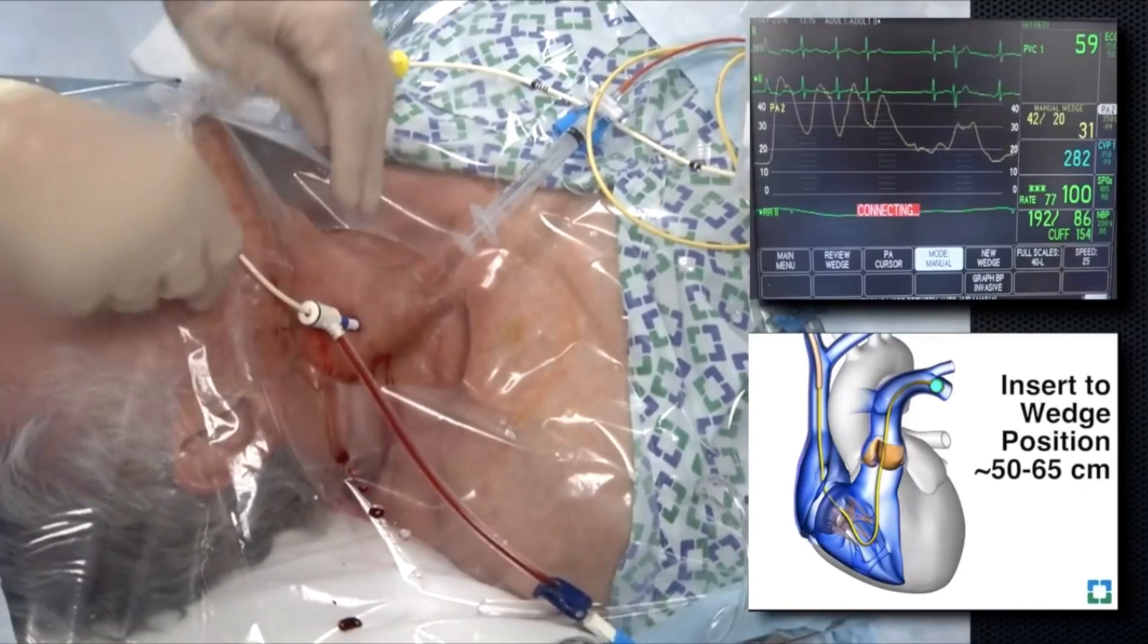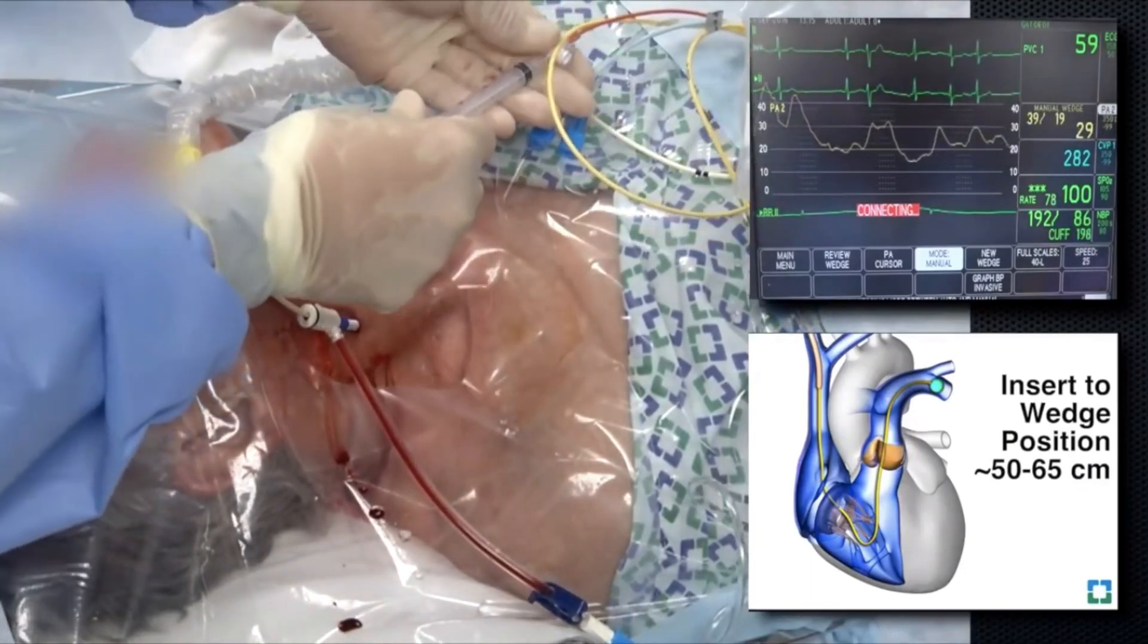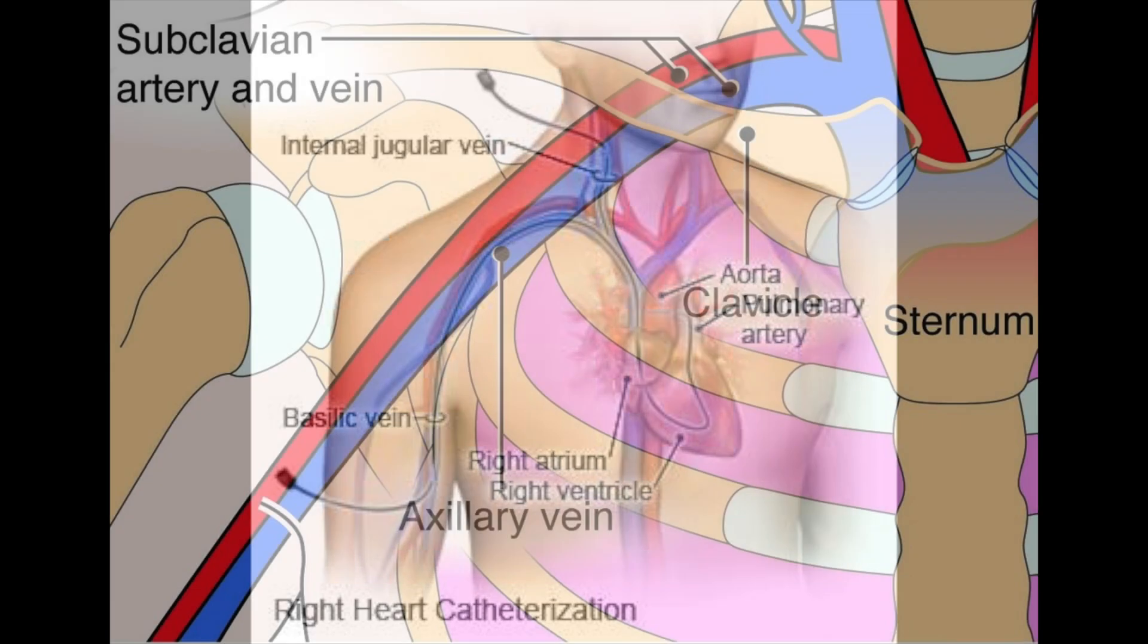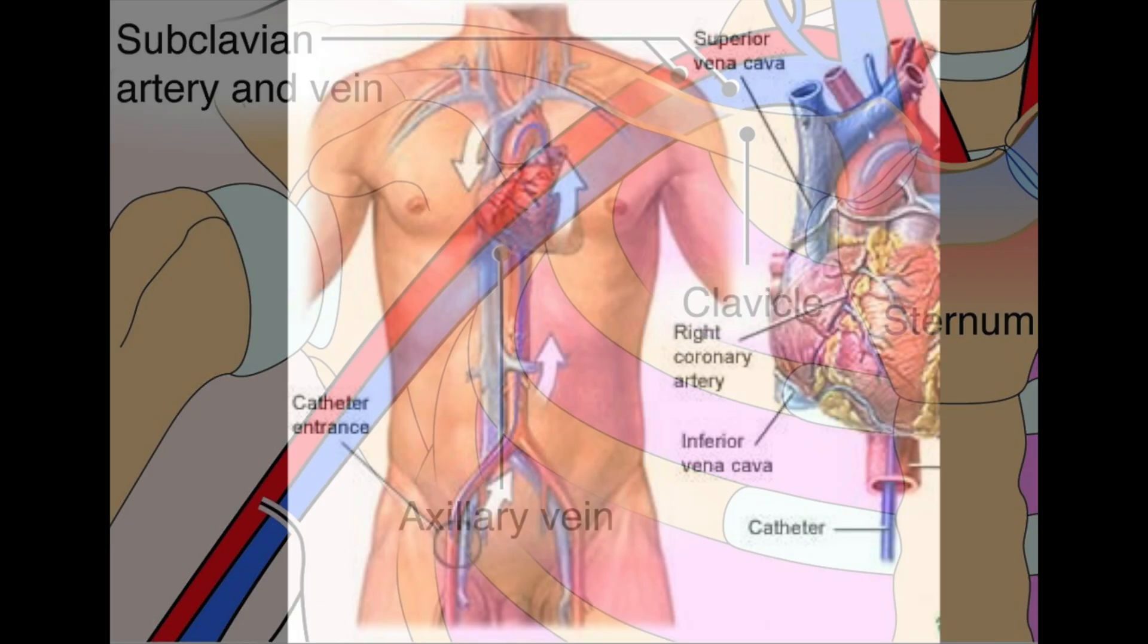The pulmonary catheter is generally inserted into one of three veins: the right internal jugular vein, left subclavian vein, and femoral veins.